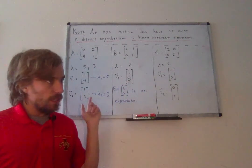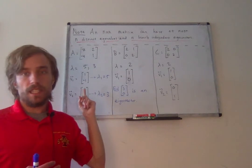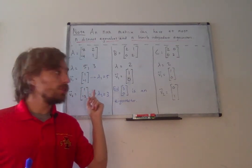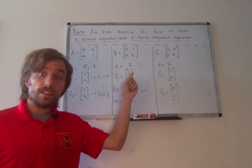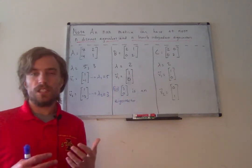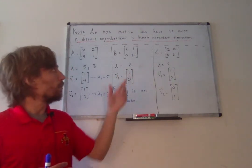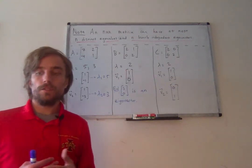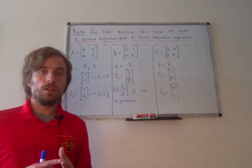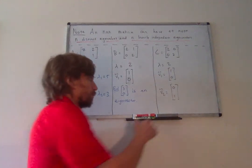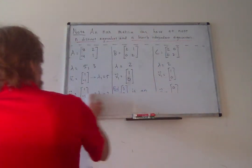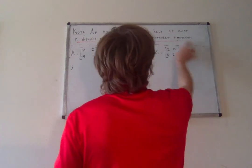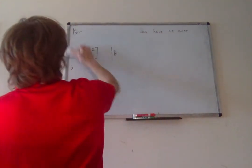So to recap: you can have n distinct eigenvalues, in which case you always have n distinct eigenvectors. You could potentially have fewer than n eigenvalues, which means you could have a varying number of linearly independent eigenvectors. Keep these examples in mind as we move forward, because this will have a lot to do with what we talk about when we discuss diagonalization.